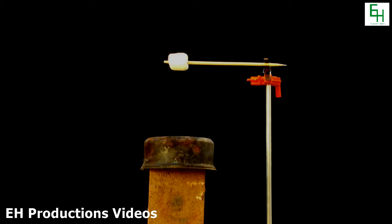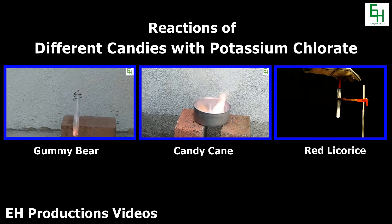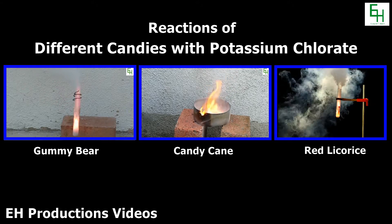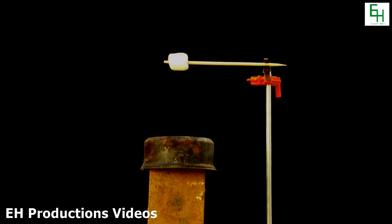Hello everybody and welcome back to another EH Productions chemistry video. If you've seen my previous videos where I reacted different candies with molten potassium chlorate, you'll notice that the potassium chlorate and candy reaction releases a lot of energy. Now if you're wondering what will happen if you react sugar directly with potassium chlorate, well we're going to find out today, and we're going to transfer all that energy released into that marshmallow hanging over. So join me today as I roast a marshmallow, not over a campfire, but over some potassium chlorate and sugar. Let's get started.